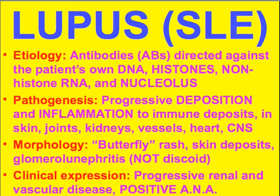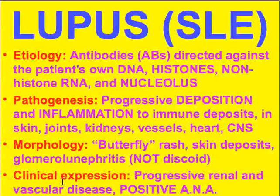Let's talk about the mother of all autoimmune diseases: lupus. Like all legitimate, recognizable, bona fide diseases, they have to have four things: an etiology, a pathogenesis, a morphology, and a clinical expression.